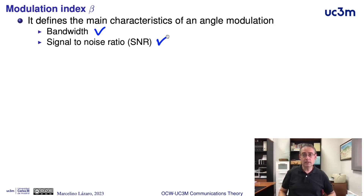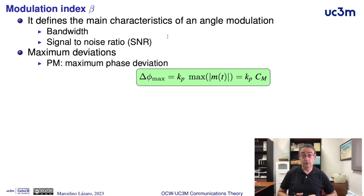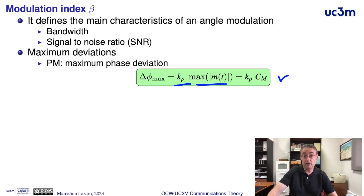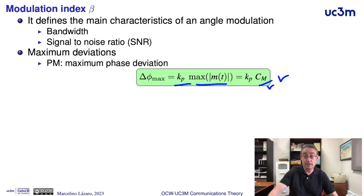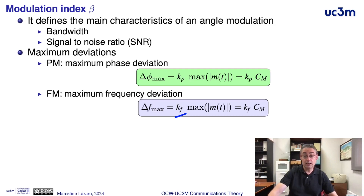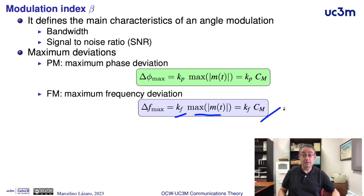The modulation index is defined from the maximum deviations. For a phase modulation, the maximum deviation is equal to the phase deviation constant Kp times the range of the modulating signal Cm. For a frequency modulation, the maximum frequency deviation is defined similarly: the frequency deviation constant Kf times the range of the modulating signal, Kf times Cm.